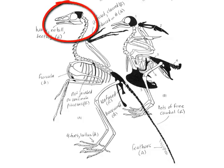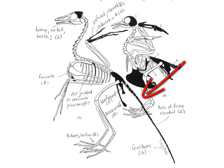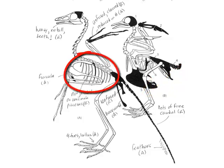The skull is very reptilian — it's a heavy structure, there's no bill, and there are teeth in sockets. The vertebral column is very reptilian: there are fewer sacral vertebrae (about six) and more free caudal vertebrae (about 20) than in any known bird, and all are biconcave — very reptilian. The ribs are reptilian too: they're not jointed, with no uncinate processes, and there are even some abdominal and cervical ribs present.